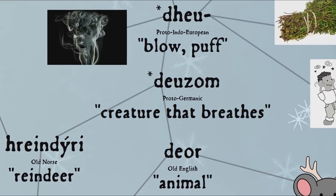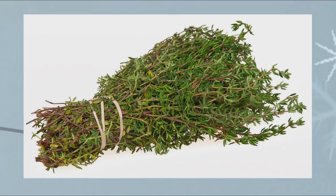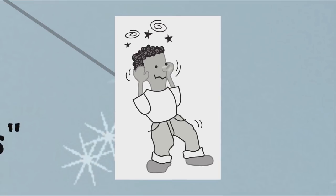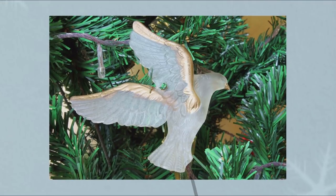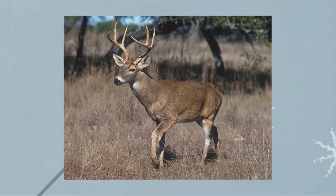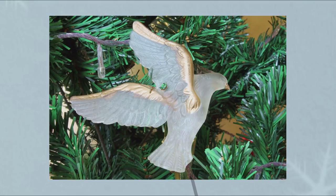Interestingly, the Proto-Indo-European root of deer means to blow or puff or rise in a cloud as dust, vapor or smoke, and has a great many English derivatives such as fume, thyme in reference to its strong smell, dizzy, deaf, dumb, and dummkopf — literally dumbhead in German — in reference to defective perception or wits, and dove for its smoky colour. So literally a deer is a breathing thing, and the word animal, from Latin, has the same semantic progression, coming from a root meaning breath. And isn't it appropriate that the reindeer is a cognate of dove, another Christmas-related animal that frequently appears as a tree ornament symbolizing peace.